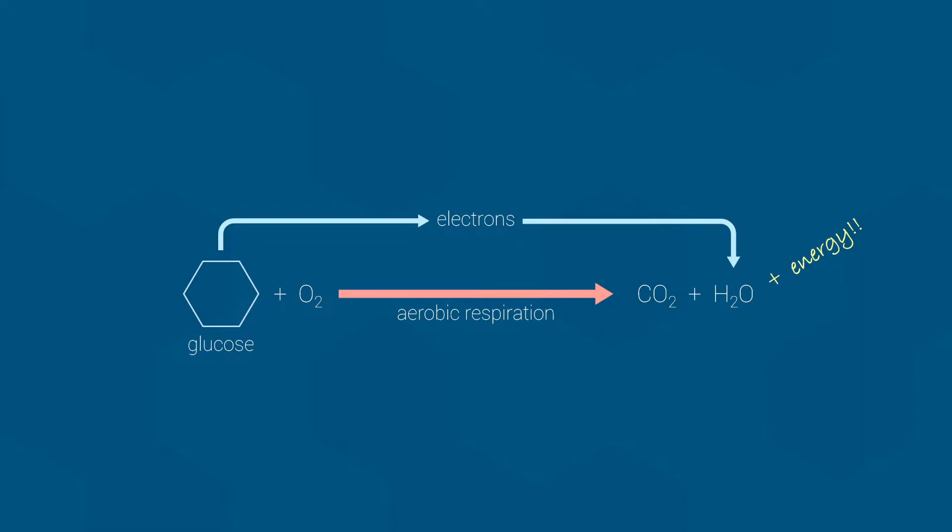Moreover, this path, which is just a series of reactions, allows cells to capture potential energy from these electrons. Before we talk about that, however, I should explain why the electrons are useful for energy capture in the first place. In other words, why does removing these electrons from glucose and using them to reduce oxygen to form water release energy at all?